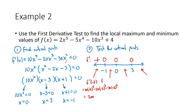Between negative one and zero I'll choose negative 0.5, and I get negative 4.375 from the calculator — all that matters is that it's negative. Between zero and three I choose f prime of one; plugging one into the derivative gives negative 40 — again, all that matters is that it's negative.